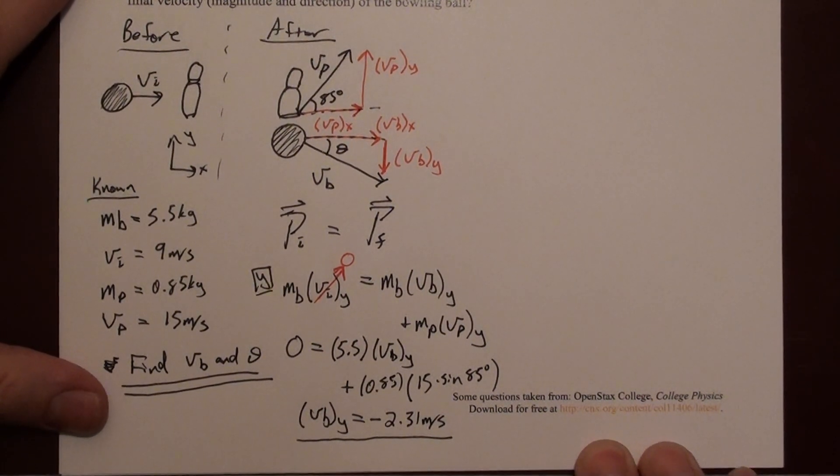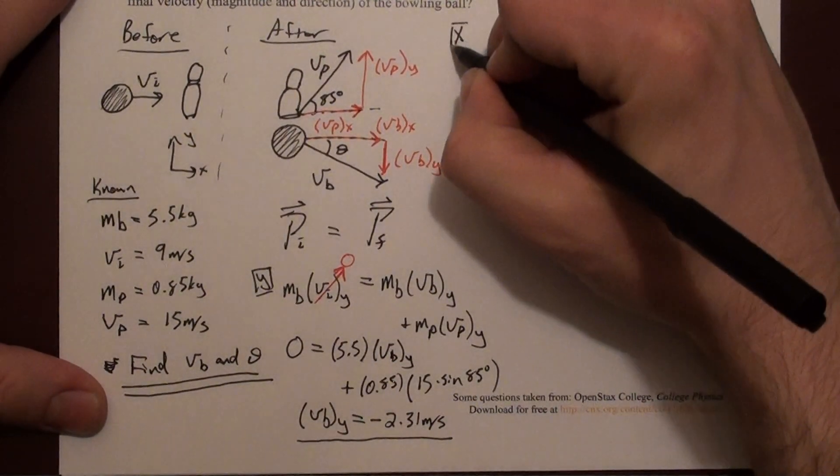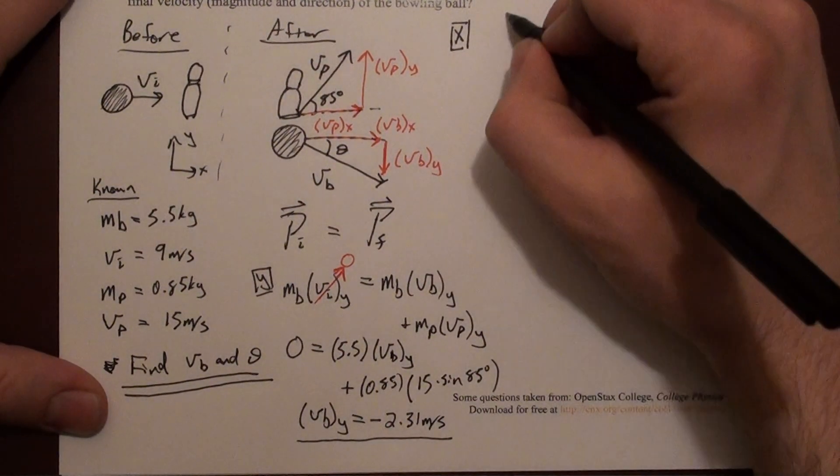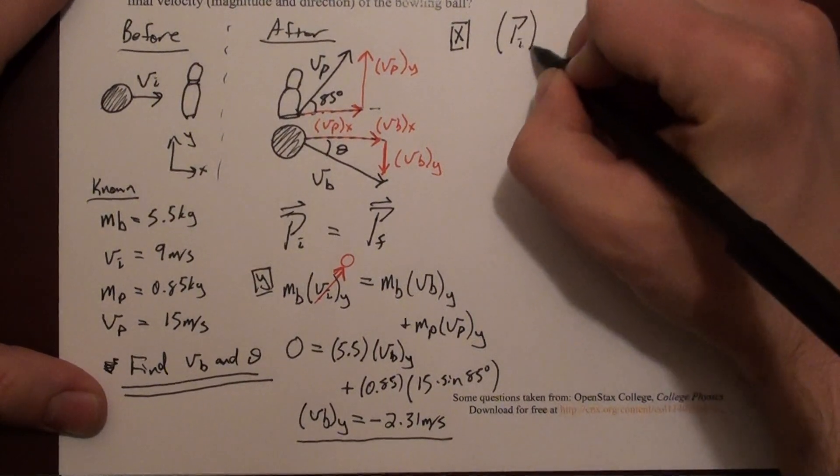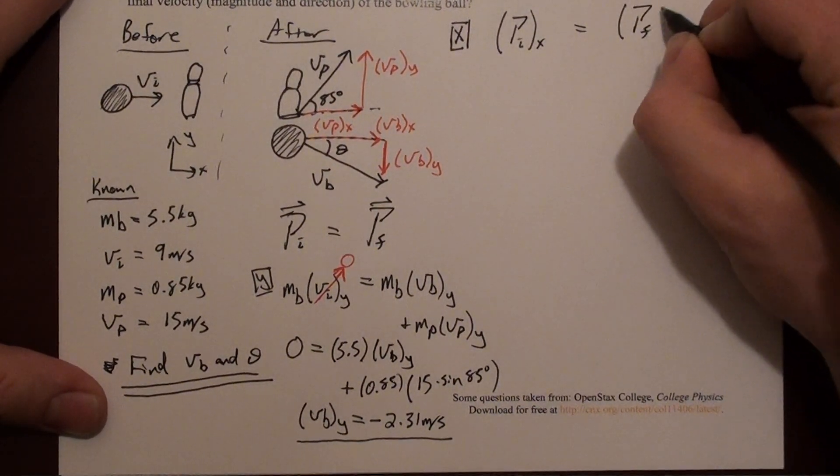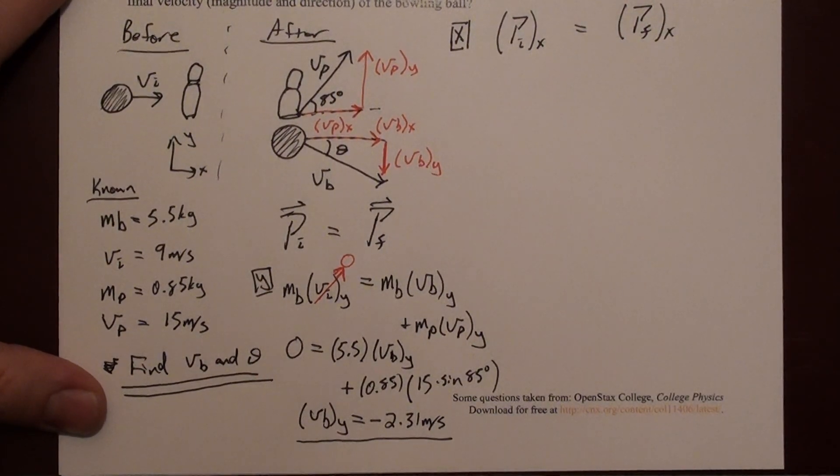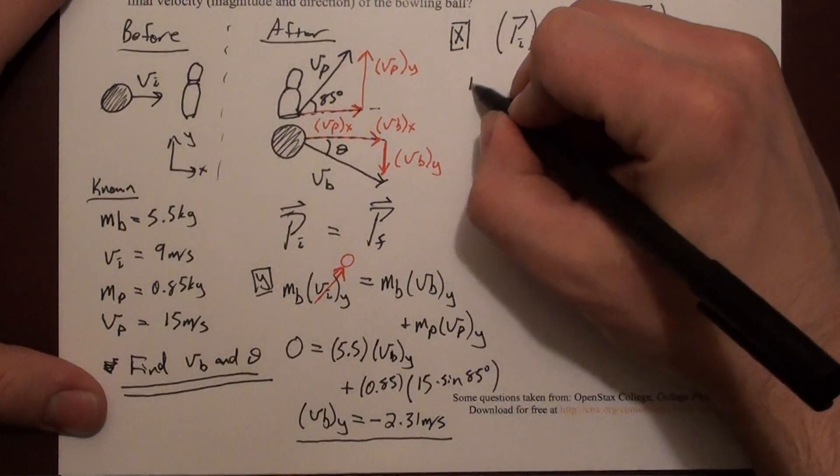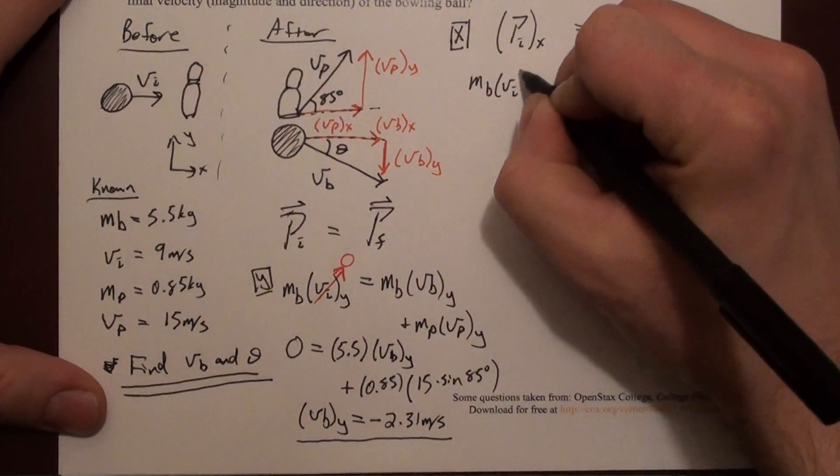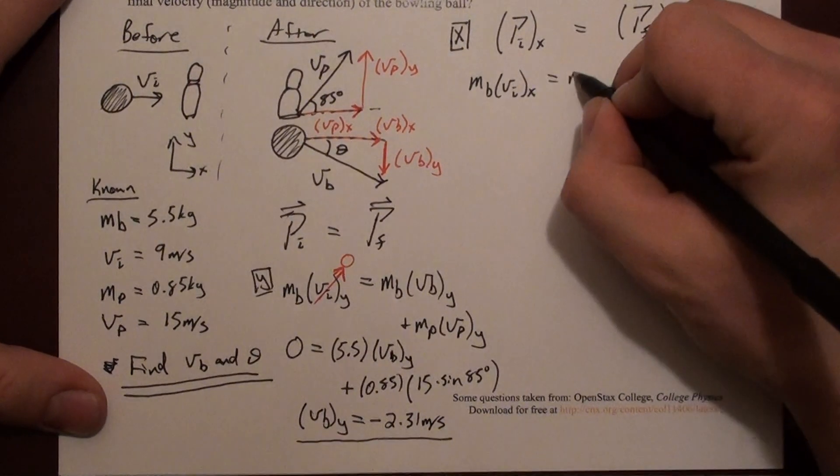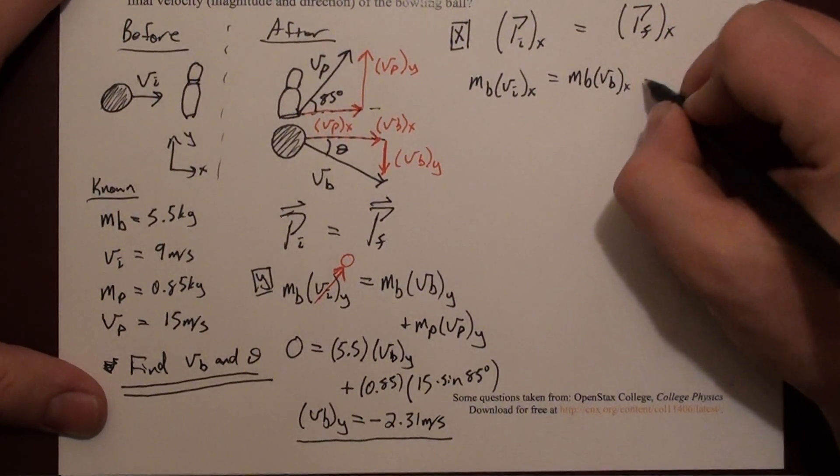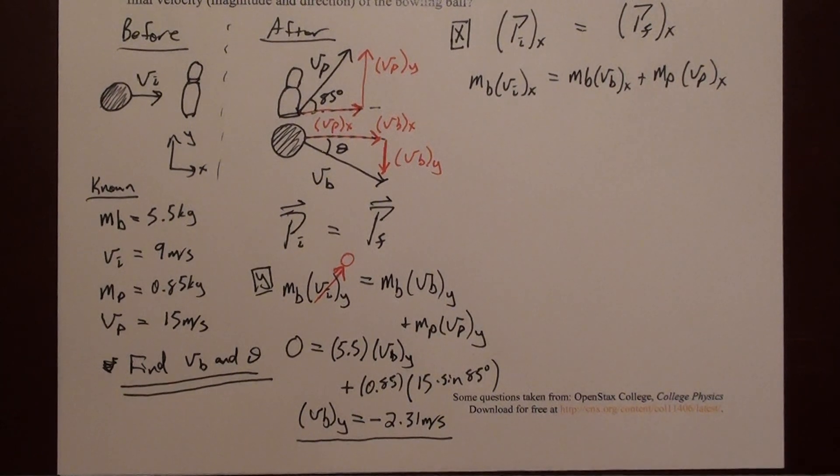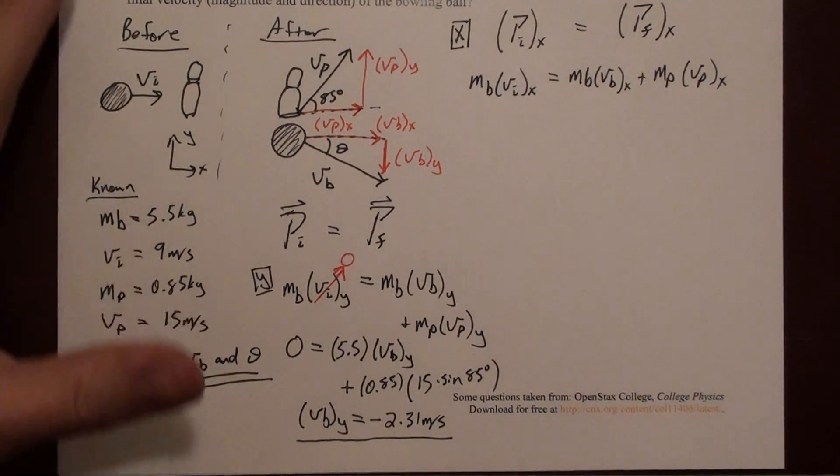Now I can do the same thing in the x direction. I can write that p initial x equals p final x. I'll write something very similar to this equation. mb v initial x equals mb v ball x plus mp v p x.